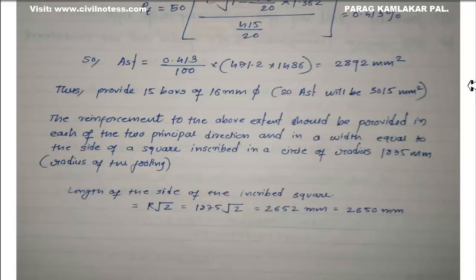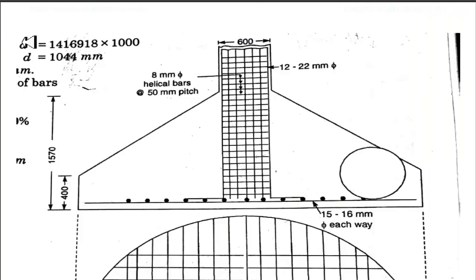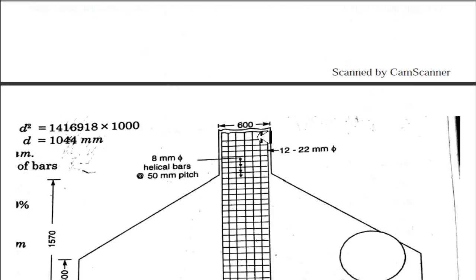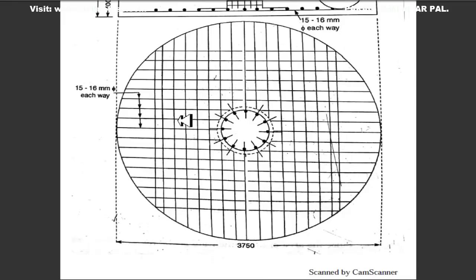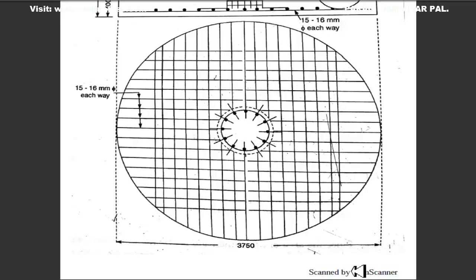Now I will describe the diagrammatic representation. You can see the column with 600 mm diameter. The overall diameter of the footing is 3750 mm. We provide 15 numbers of 16 mm diameter bars horizontally and 15 numbers of 16 mm diameter bars vertically in the footing — that is, 15 bars in one principal direction and 15 bars in the transverse direction.